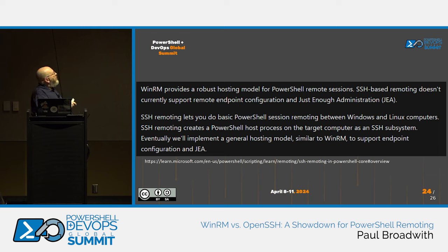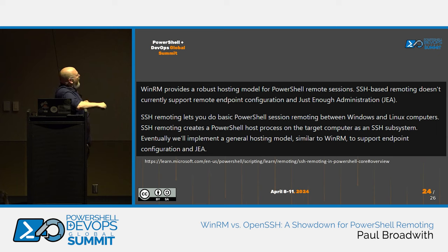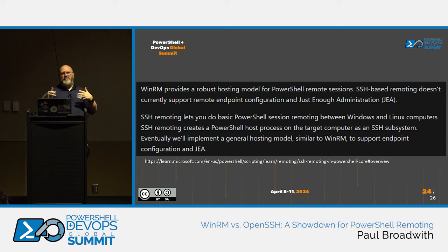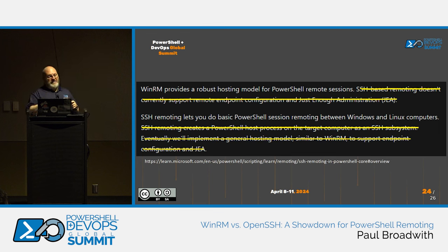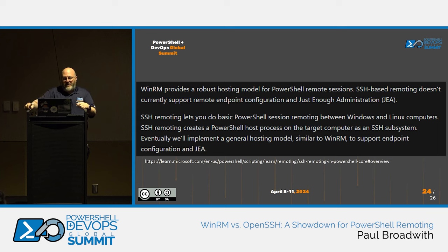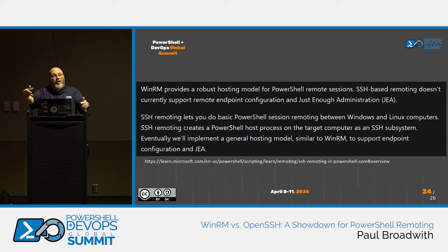As for the future of OpenSSH on Windows: the Microsoft Learn documentation says 'WinRM provides a robust hosting model for PowerShell remote sessions and SSH remoting lets you do basic PowerShell sessions on Windows and Linux computers.' Importantly, it also says 'eventually we'll implement a general hosting model similar to WinRM to support endpoint configuration in JEA.' So that's coming — or should be coming — they've talked about it. It was talked about a year ago too and nothing has changed, but it's still in the pipeline as far as I understand.